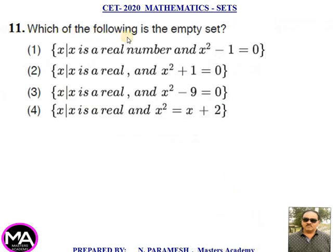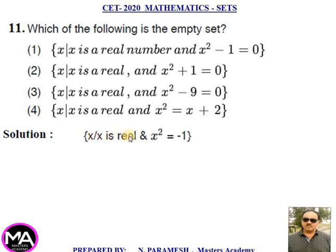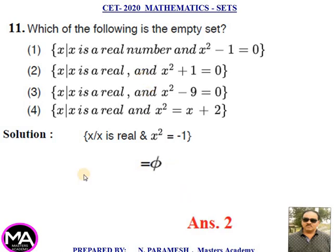11th question. Which of the following is the empty set? Four options are given. Solution: Consider set X such that X is real and X² + 1 = 0. Then X² = −1, so X = ±√(−1). Since there is no real number satisfying this, the set is a null set. That is option second.